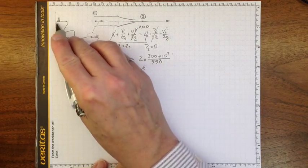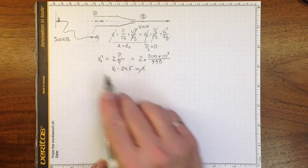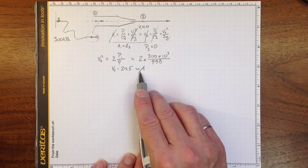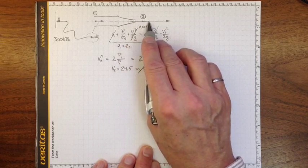And as long as we don't have significant losses in our hose, then we can start with our supply pressure and we'll get about 24.5 meters per second. That's the speed at which the water comes out of the nozzle.